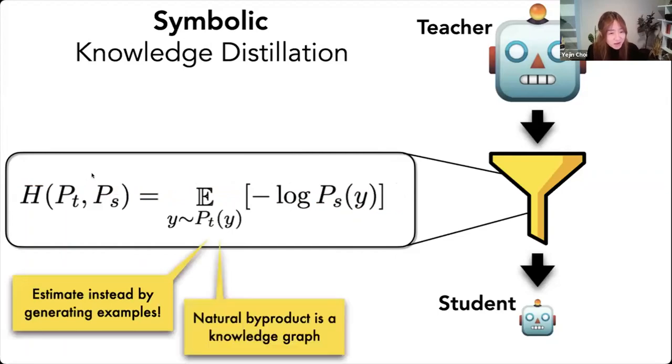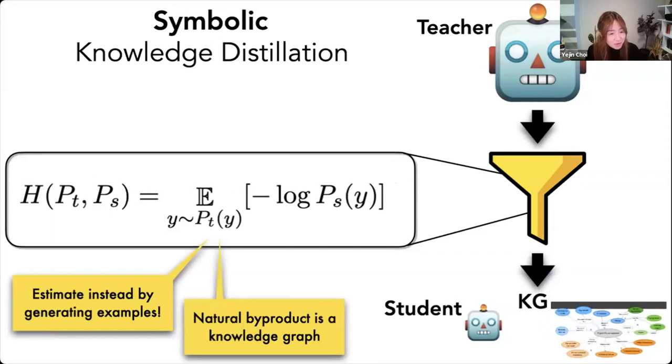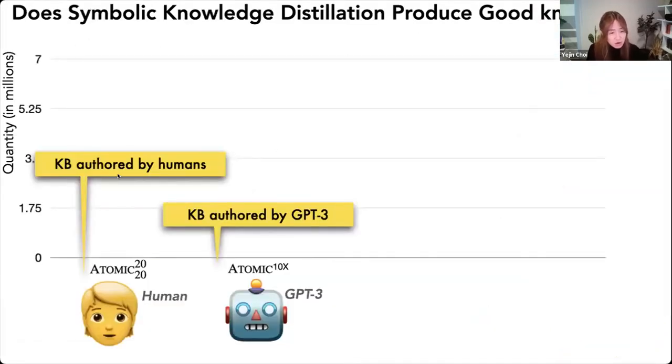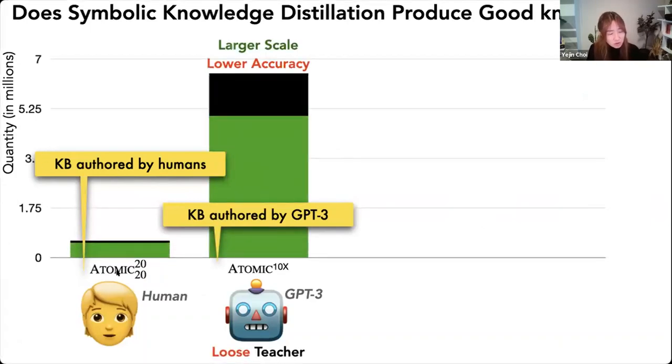In fact, when we do that, we can also connect up the inferences into a graph structure. And so that's a natural byproduct of this process. Now, let me compare the quality and quantity of atomic 2020 written by human versus atomic 10x written by GPT-3. So here, what you see in the y-axis is quantity millions. And so atomic 2020, in this study, we only look at the subset of atomic 2020 corresponding to causal common sense reasoning. So in terms of quantity, it's less than a million triples. And green portion is a good portion and black is bad. So if we look at this GPT-3 output, you remember it was about 73% good, which means about 30% is noise. So it's not very reliable knowledge source.